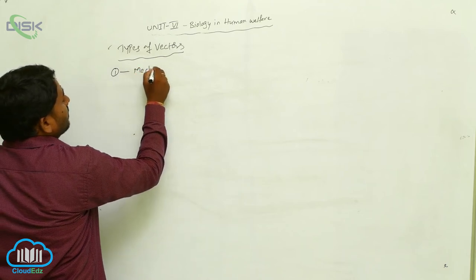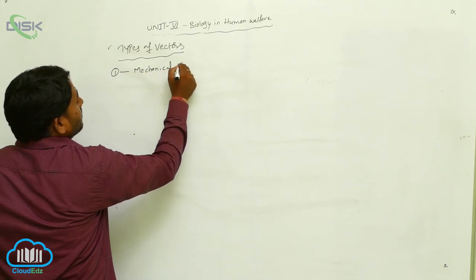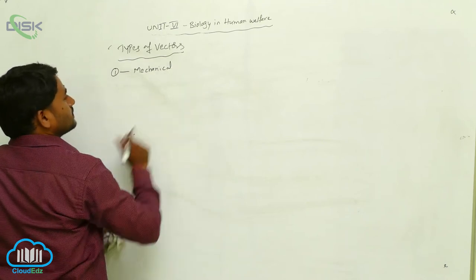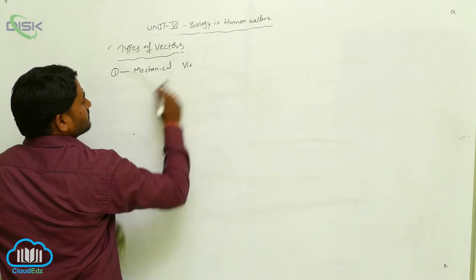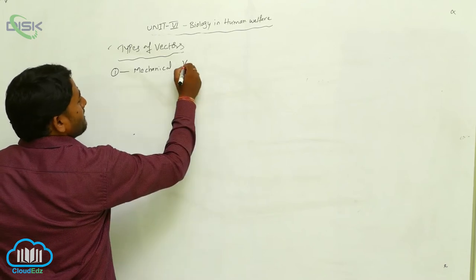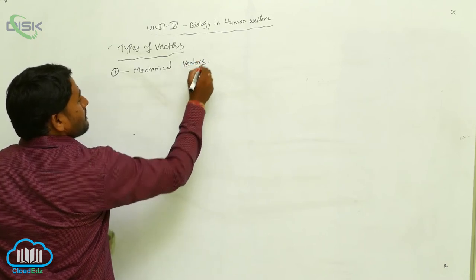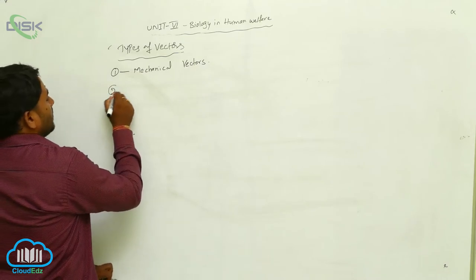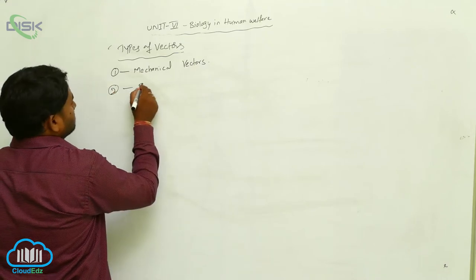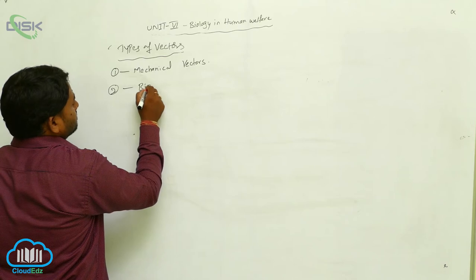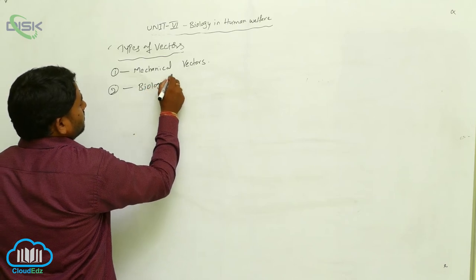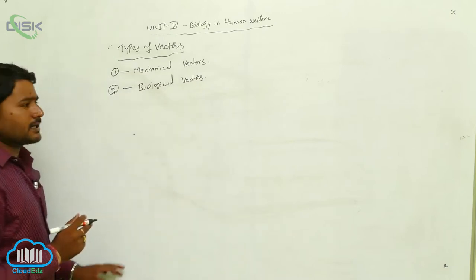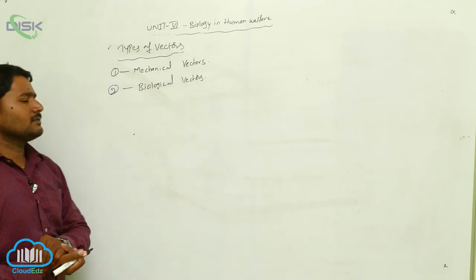The first type is mechanical vectors, and the next type is biological vectors.